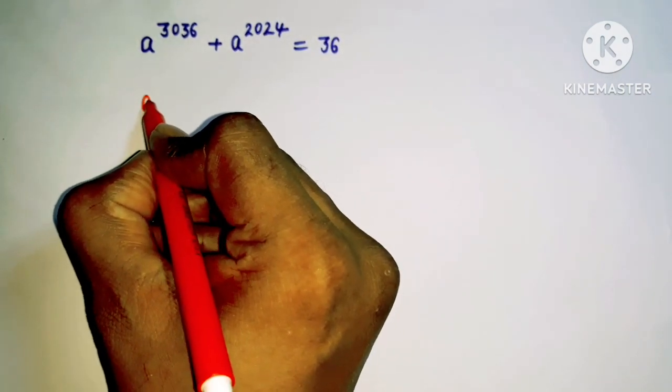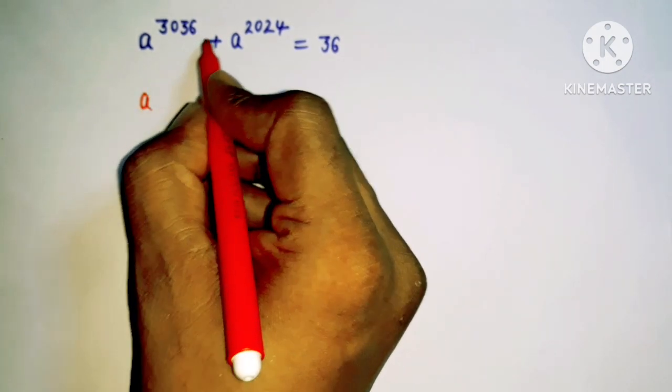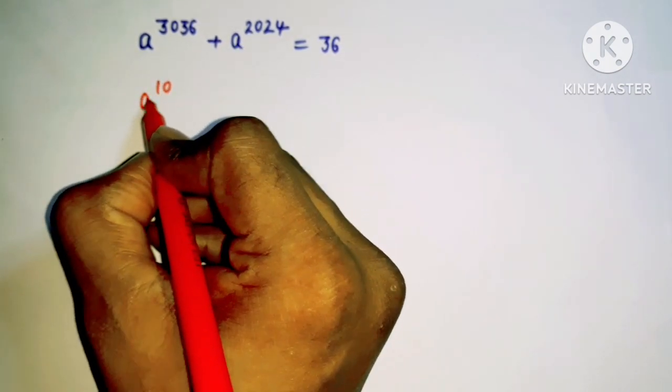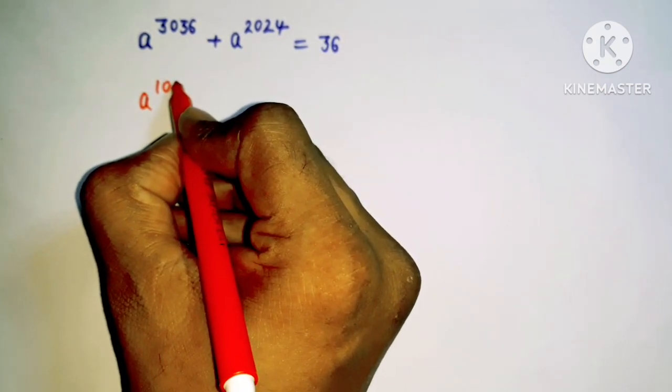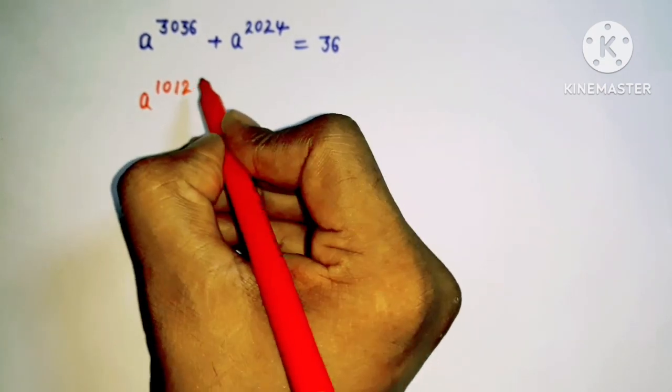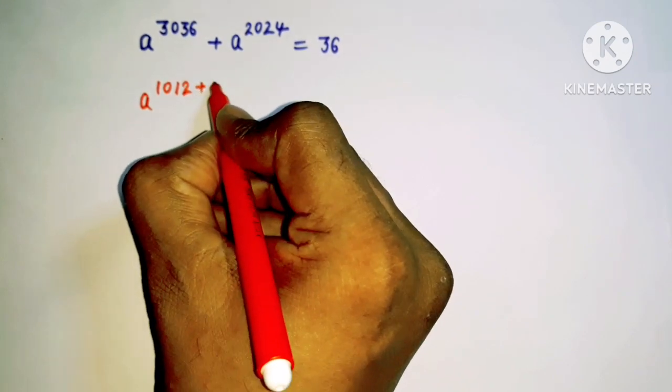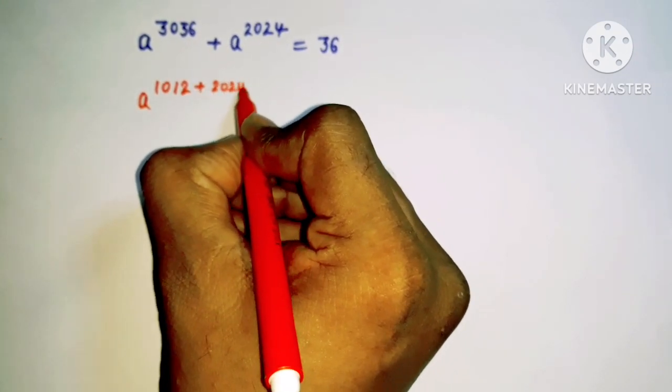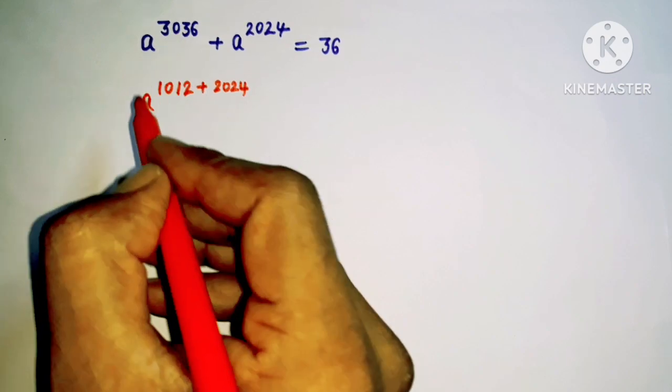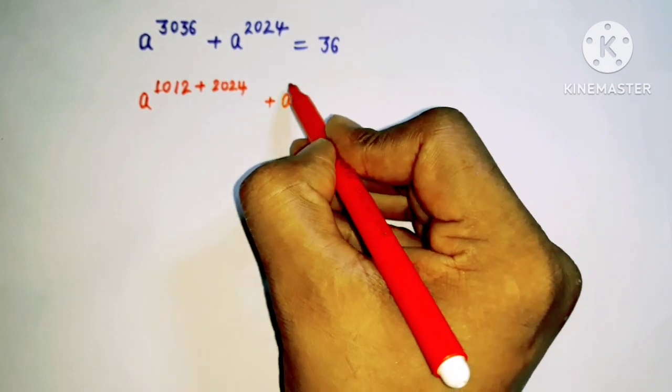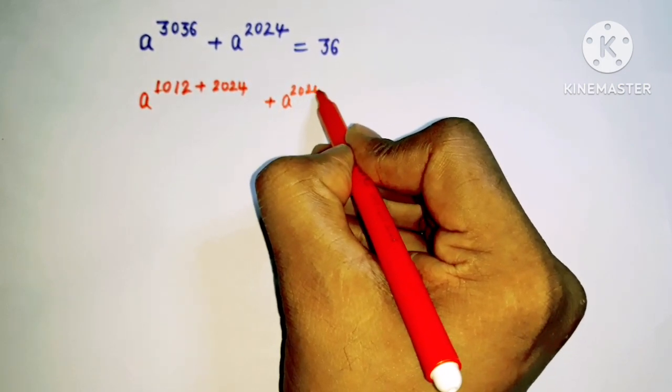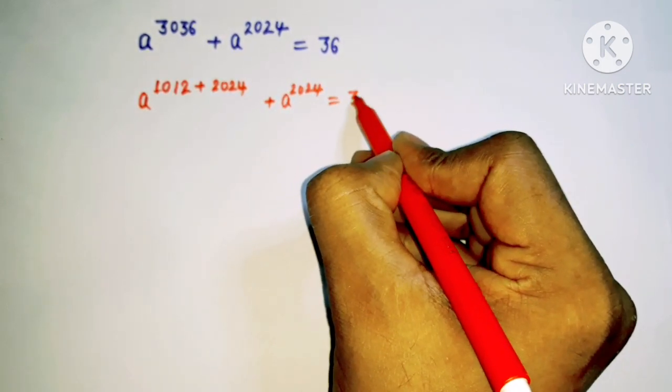So here I can write 1012 plus 2024, which gives us 3036, plus we have a to the power 2024 that is equal to 36.